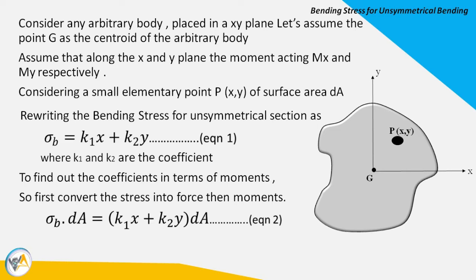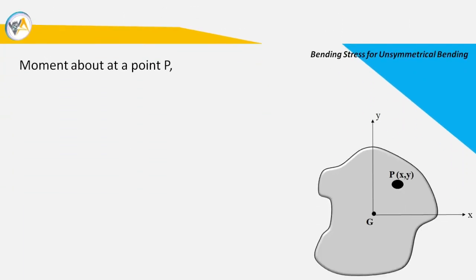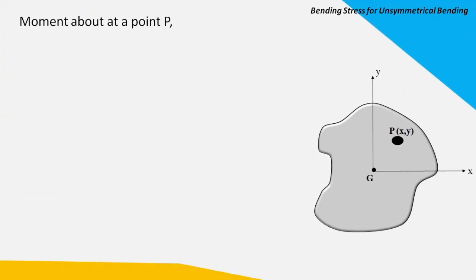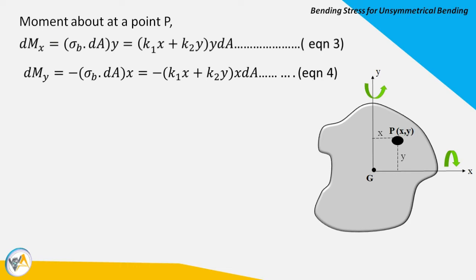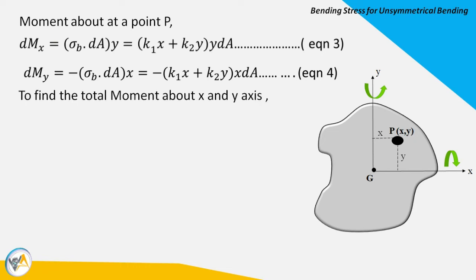To find the moment at point B, recall that moment equals force times perpendicular distance. Mx is positive and My is negative. The moment about the X axis gives: (k1·x + k2·y)·y·dA — equation three. The moment about the Y axis is negative, since My acts anti-clockwise, giving: −(k1·x + k2·y)·x·dA — equation four.